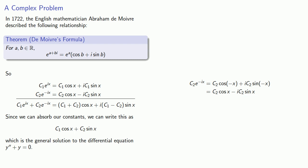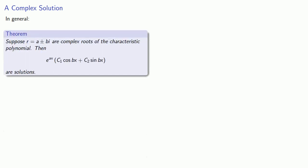I'd check this if I were you. In general, this leads to the following: Suppose r = a ± bi are complex roots of the characteristic polynomial. Then e^(ax)*(c₁*cos(bx) + c₂*sin(bx)) are going to be solutions to the corresponding differential equation.